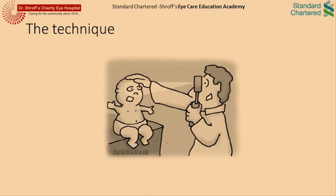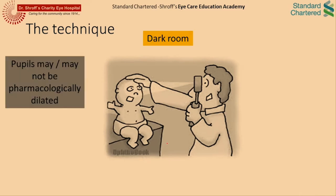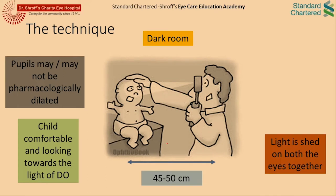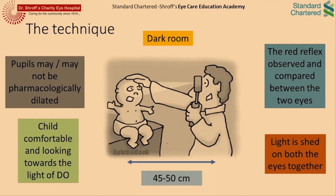The technique of acquiring a red reflex using a direct ophthalmoscope is a simple one. One needs a dark or semi-dark room. The pupils of the patient may or may not be pharmacologically dilated. The child should be comfortable and look towards the light of the direct ophthalmoscope for at least a few seconds. The ideal distance for performing this is around half a meter. The light from the ophthalmoscope is shown on both eyes together and the quality of the red reflex is compared between the two eyes.